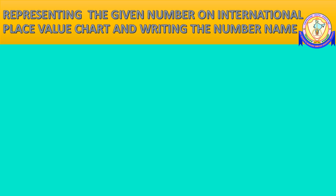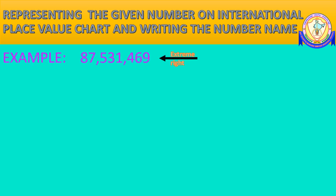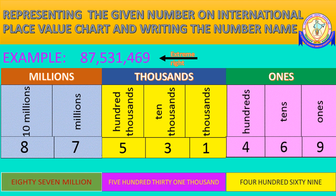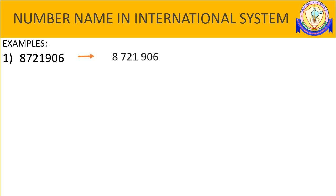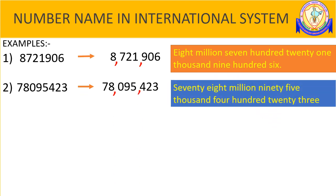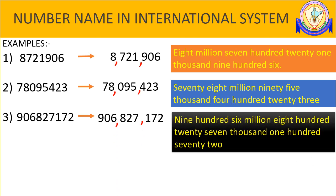Place value chart helps in writing the number name. For example, the given number is an eight-digit number. By placing the number on the place value chart, we can write the number name as 87,531,469. Here are a few more examples — carefully observe the placement of commas. The number name of the first number is 87,721,906. The number name of the second example is 78,095,423. The number name of the third example is 906,827,172.